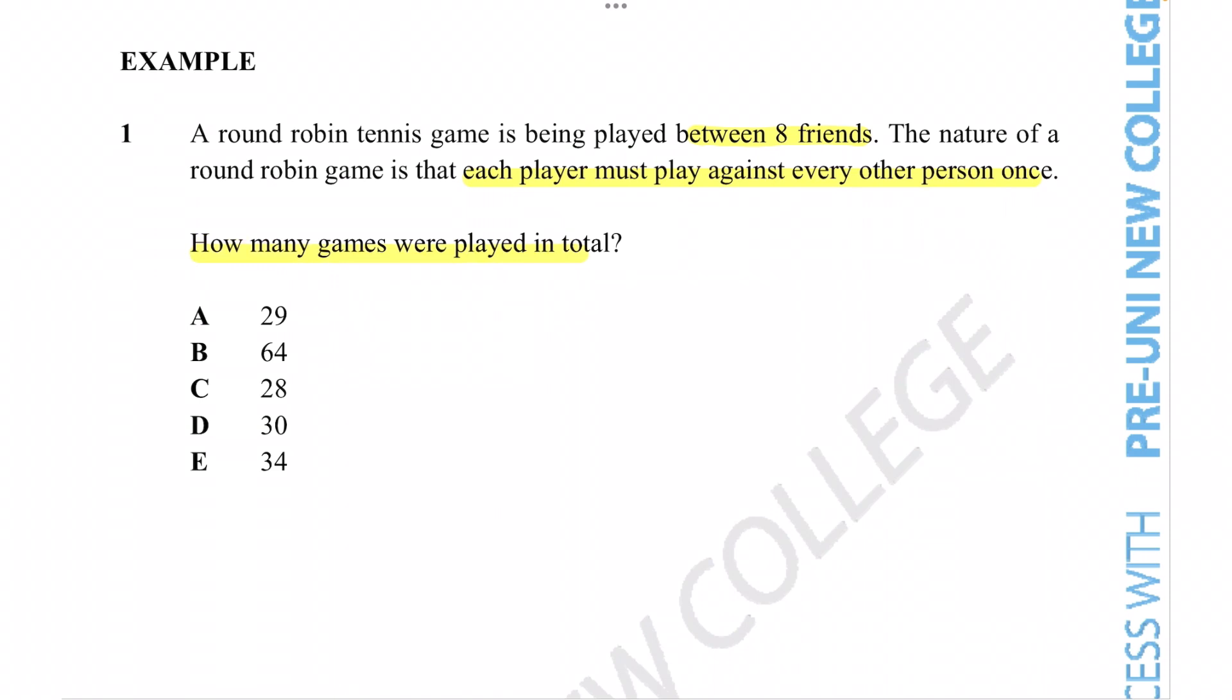I don't know about you, but I'm not a big fan of tennis and I have no clue what a round robin tennis game is. Thankfully, the question has specified that the condition of a round robin game is that we need to play against every other person in the team once. So we can use this information, even if you're a person like me who has no idea anything about tennis, to answer the question.